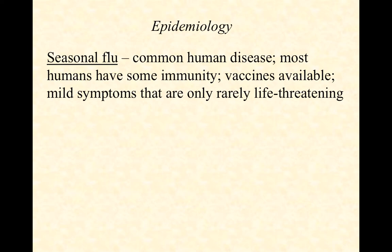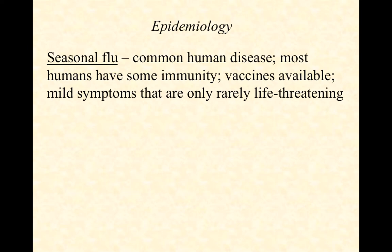Now for the epidemiology. Seasonal flu is the common human disease. Most of us have some low-level immunity because we've been exposed at some level, and vaccines are available. Those vaccines must be altered each year, so the CDC watches the types of influenza strains circulating around the world and tries to predict which ones will land in the United States. They then have a couple of months to assemble vaccines representing the two, three, or four most likely strains.